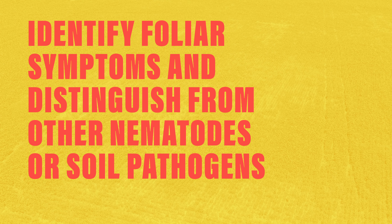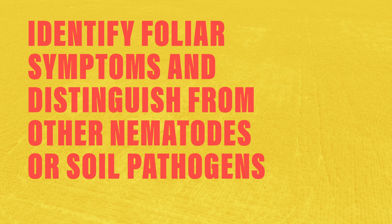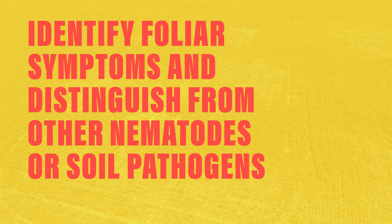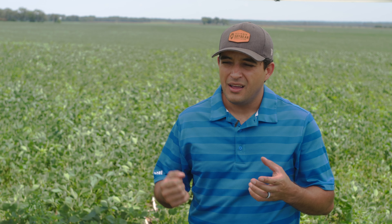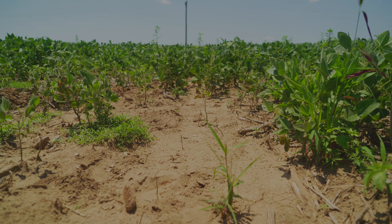Symptoms caused by the root knot nematode usually appear in patches. We're here over a hill with very high sand content, and that not only favors the development of the nematode — because it prefers high temperatures and sandy soils — but also worsens the symptoms. We're in a very dry year, and plants that have a damaged root system tend to show more symptoms in general.